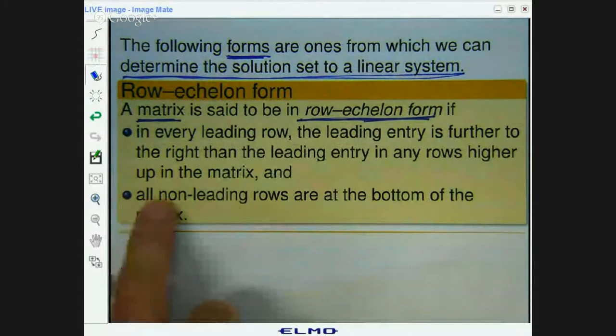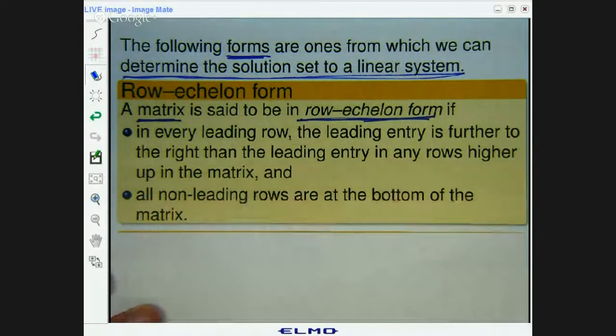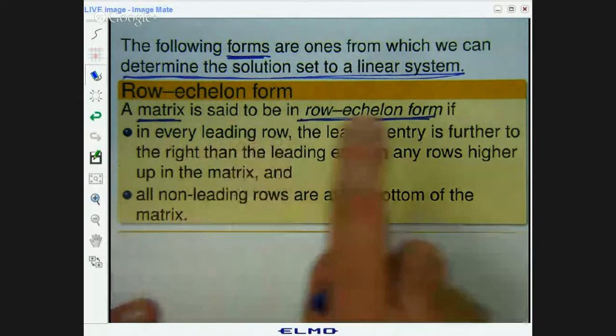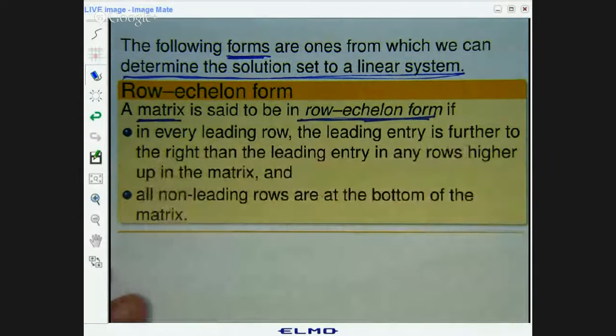It's said to be in a row echelon form if the following two dot points are satisfied. Firstly, all non-leading or non-zero rows are right at the bottom of the matrix. And in every leading row, the leading entry is further to the right than the leading entry in any rows higher up the matrix.